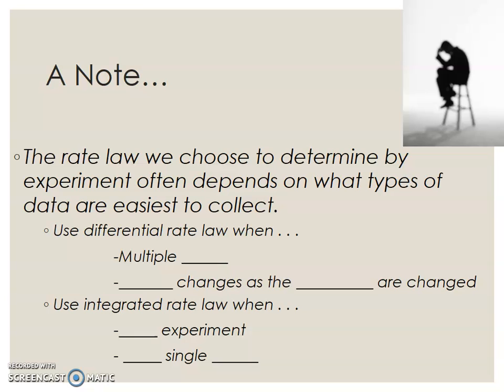The rate law we choose to determine by experiment often depends on what types of data are easiest to collect. We use the differential rate law, that's what we talked about in 12.2 and 12.3, when we have multiple trials and the rate changes as the concentrations are changed. Remember we looked at trial one, trial two, trial three, and we saw different rates throughout that. The integrated rate law, which is the new rate law we're discussing today, you're only going to have one experiment and one single trial.